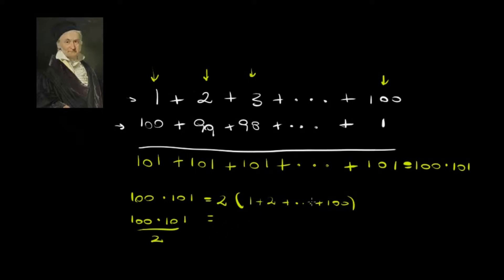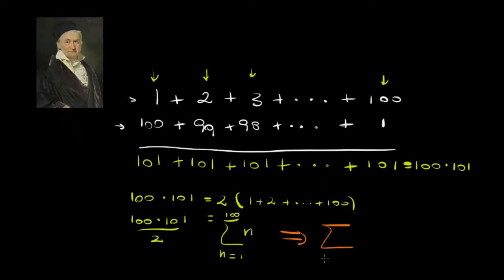So this is 2 times the sum from 1 plus 2 plus ... plus 100. To get the sum he actually wanted, what he had to do was 100 times 101 divided by 2. We will change this notation — we're gonna use the sum symbol from n equals 1 to 100 of n. And in general, the sum from i equals 1 to n of i equals n times (n plus 1) over 2.